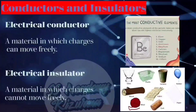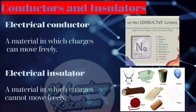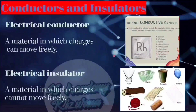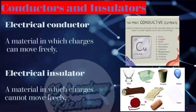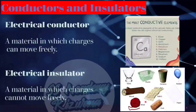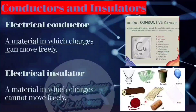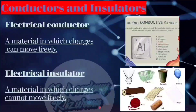Electrical insulators are materials that conduct electric charge poorly. Although there are some exceptions, generally good thermal conductors are good electrical conductors as well. Also, in many cases, thermal insulators are also electrical insulators. Rubber, wood, and many plastics are some common examples. Electrical wiring is coated by rubber or plastic to prevent electric charge from going where it is not wanted.